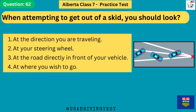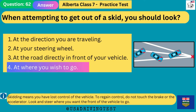When attempting to get out of a skid, you should look: 1. At the direction you are traveling. 2. At your steering wheel. 3. At the road directly in front of your vehicle. 4. At where you wish to go. The answer is 4: at where you wish to go. Skidding means you have lost control of the vehicle. To regain control, do not touch the brake or the accelerator. Look and steer where you want the front of the vehicle to go.